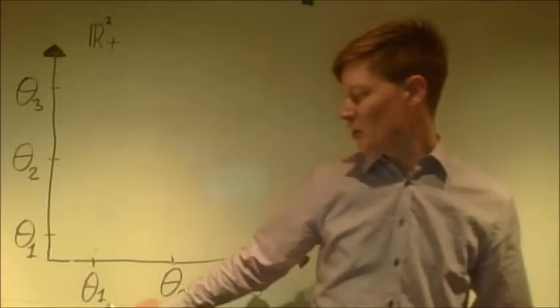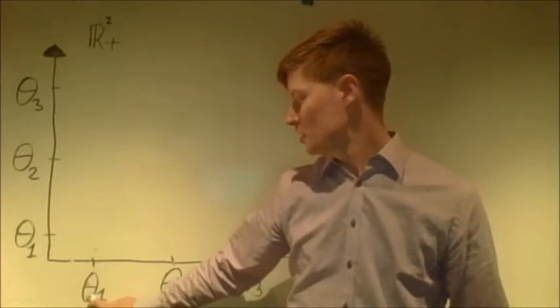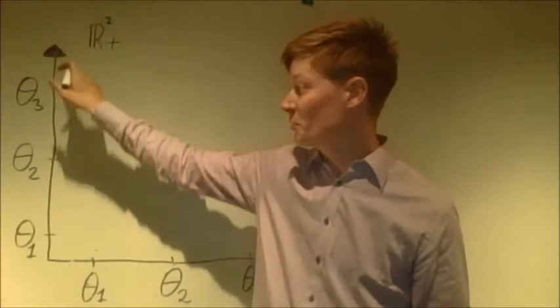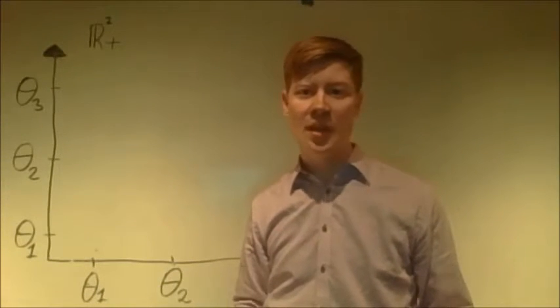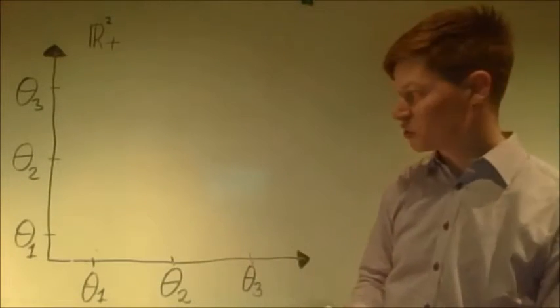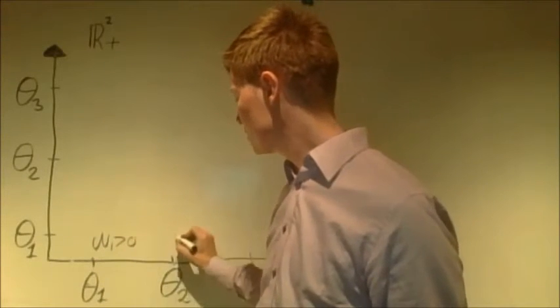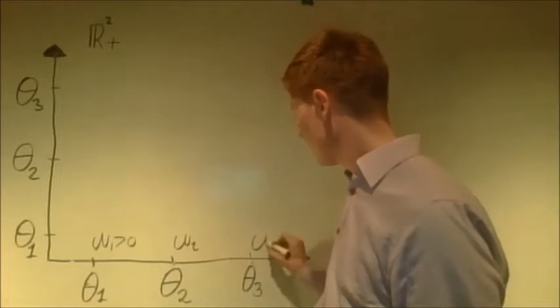We assume we are given an infinite number of potential vertices, theta1, theta2, theta3. These are just numbers. Same numbers are present on the other axis. Each of these potential vertices has a sociability parameter w, and these are just positive numbers like this.